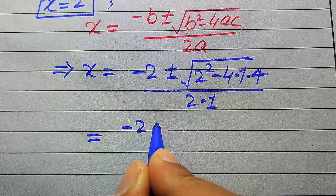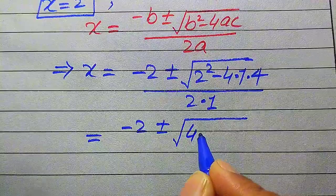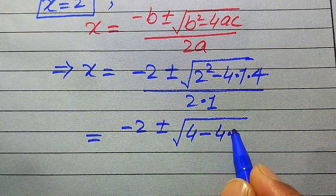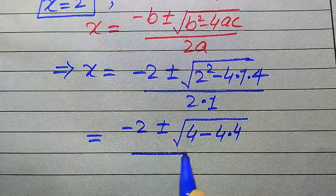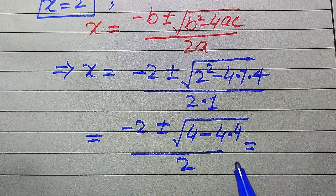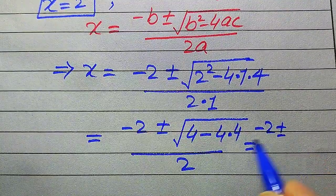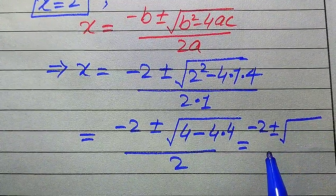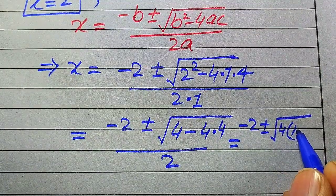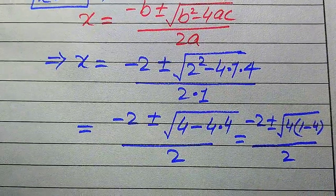In the next step, 2 squared equals 4, so inside the square root we have 4 minus 16, which gives minus 12. Taking 4 as a common factor inside the square root, we get 4(1 minus 4), which is 4 times minus 3. The expression becomes minus 2 plus or minus square root of 4(minus 3), divided by 2.